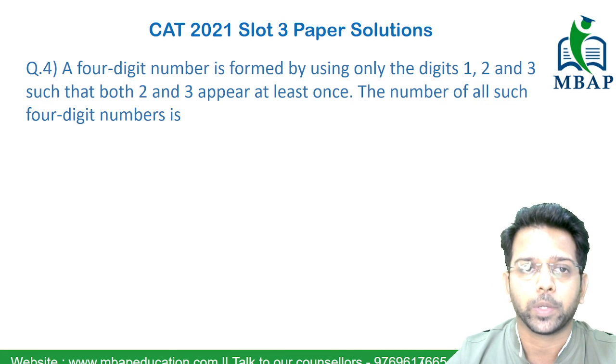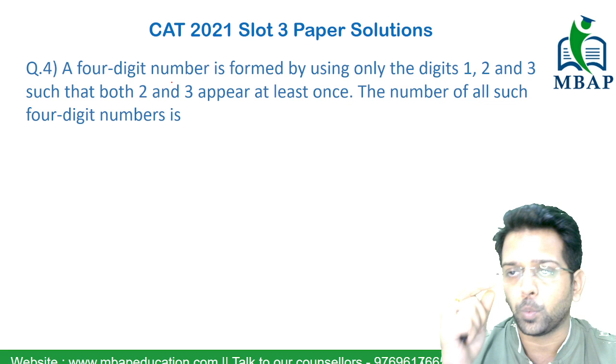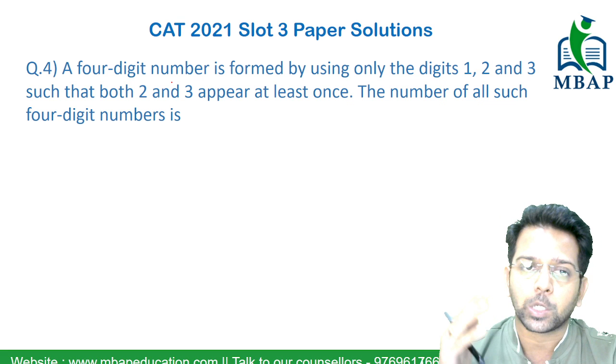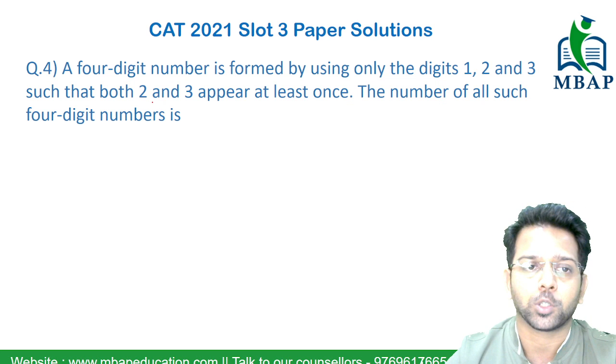Let's have a look at the next question. The question says a four-digit number is formed by using the digits 1, 2, and 3 such that 2 and 3 appear at least once. The question is how many such numbers are possible which is a four-digit.